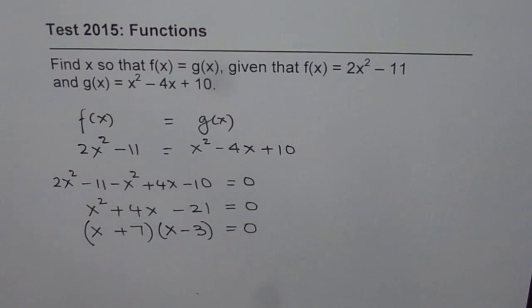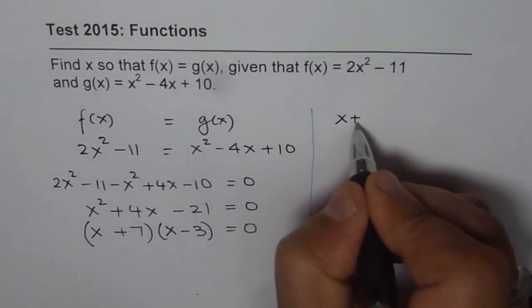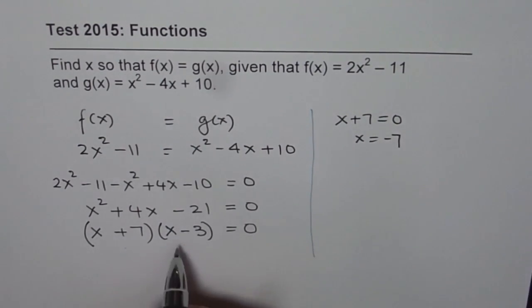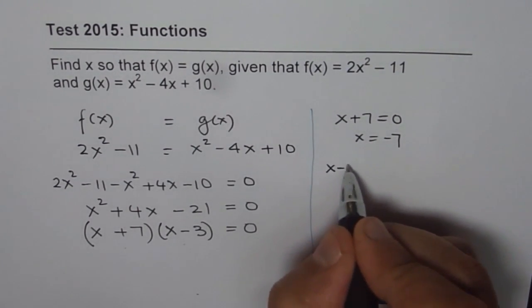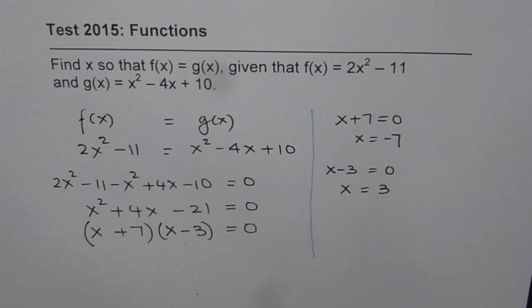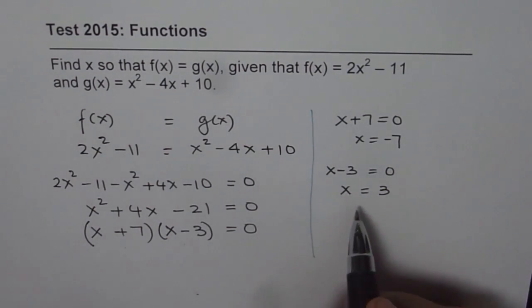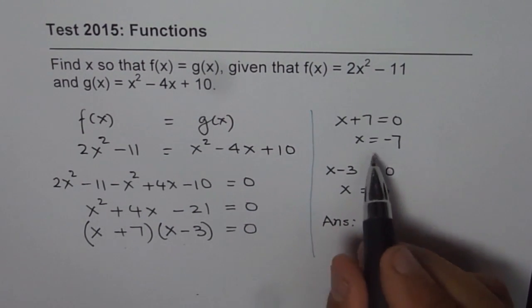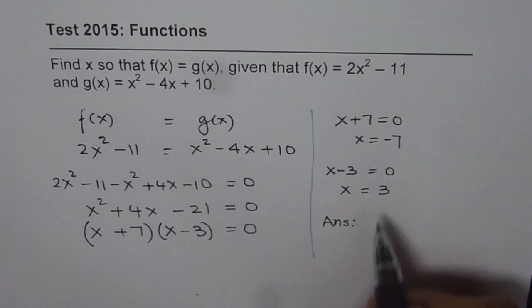Now that gives us two solutions. To get the solutions, we need to equate each factor to 0. So equating x plus 7 to 0 gives us x equals minus 7, and equating x minus 3 equals 0 gives us x equals 3. So there are two points. Answer is x equals minus 7 and x equals 3.